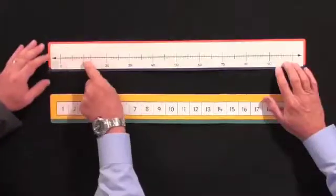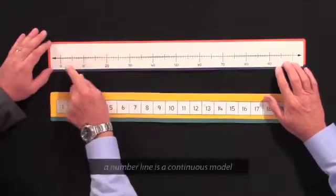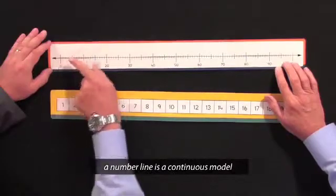When I go to a number line, what we do is we have more a continuous model, which means that a number is still a chunk, but it's a distance, it's a distance from a starting point.